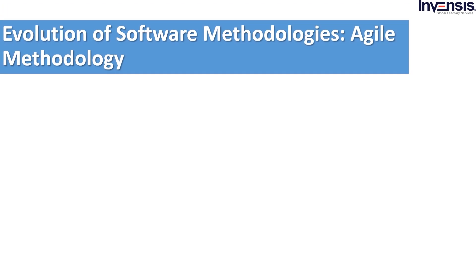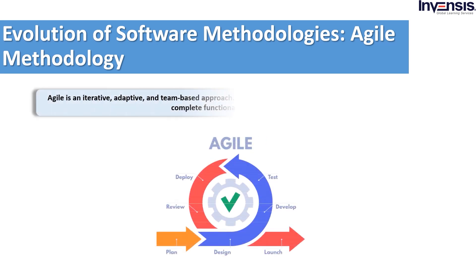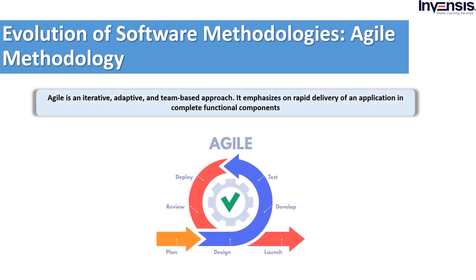But stable requirements are an improbable thing in today's world, as specifications keep changing from time to time. Now let's move on to Agile methodology. This method promotes the continuous iteration of development and testing during the software development cycle. In simple terms, Agile is an iterative, adaptive, and team-based approach. It emphasizes rapid delivery of an application and complete functional components. Each project is broken into iterations, usually two to eight weeks, and at the end of each iteration a working product should be delivered.